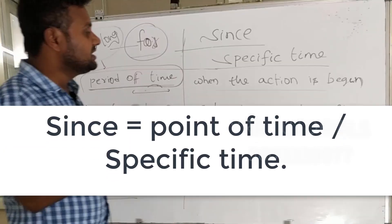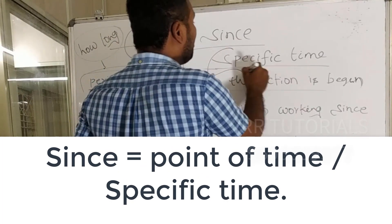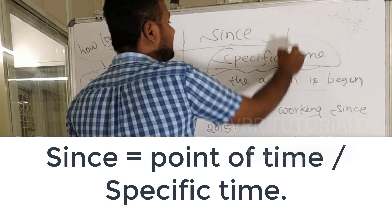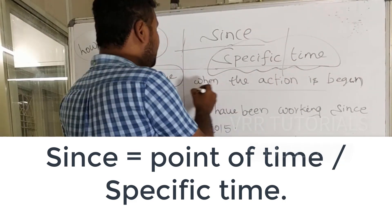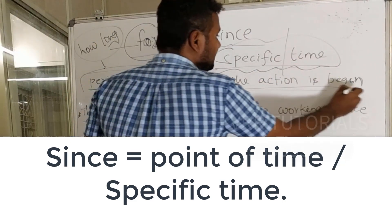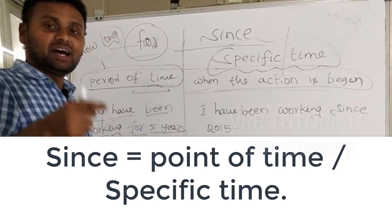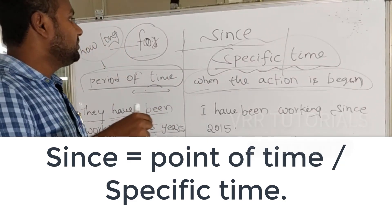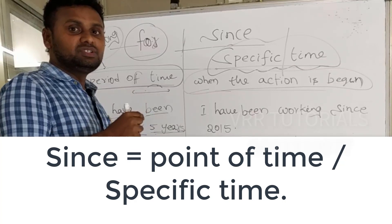Now let's go to 'since'. 'Since' is a point of time, or a specific time. We use 'since' when we mention when the action began — the starting point of the action.